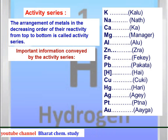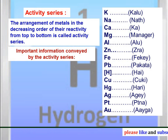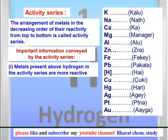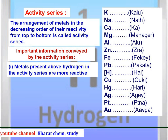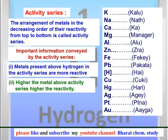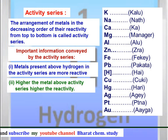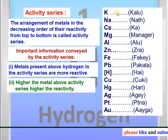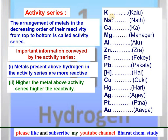Now the important information conveyed by the activity series. First, the metals present above hydrogen in the activity series are most reactive. Higher the position of a metal above hydrogen in the activity series, higher is its reactivity. For example, potassium is present at the top of the activity series, so it is highly reactive.